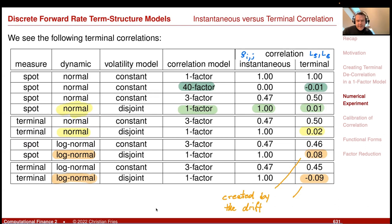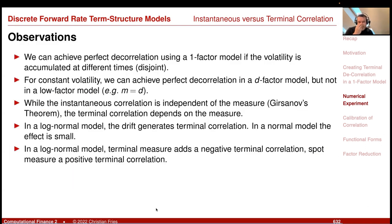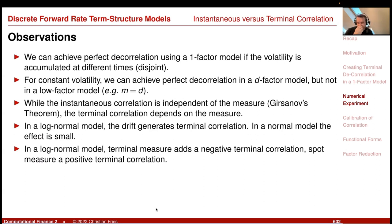So here is a collection of our observations: we can achieve perfect decorrelation in a one-factor model (and in a high-factor model, but not in a low-factor model with constant volatilities). Instantaneous correlation is independent of the measure — that is Girsanov's theorem — while terminal correlation depends on the measure because correlation is also generated by the drift. Only the infinitesimal parameters σ and ρ are independent of a measure change; the terminal correlations and variances we observe are not. For a log-normal model, the drift generates additional correlation.